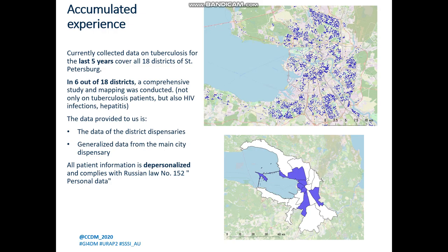A main point is that we do not want to make a special monitoring system for diseases in St. Petersburg. Currently, we have collected data on tuberculosis for the last five years, covering all 18 administrative districts in St. Petersburg. In six out of 18 districts, a comprehensive study and mapping was conducted with attention to HIV and hepatitis, and an estimate of the work quality of local hospitals and clinics. However, despite the advantages, GIS tools are not easy for medical specialists — they are operated easily by GIS domain specialists, but are very difficult for medical professionals.